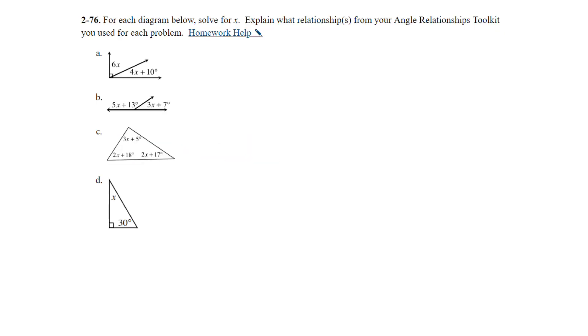Question 76. For each diagram below, solve for x. Explain what relationship or relationships from your angle relationship toolkit you used for each problem. So we'll go ahead and start on part A. We recognize that there is a right angle formed, which means it is complementary to each other. So we've got 6x plus 4x plus 10 degrees is equal to 90 degrees, since it forms a right angle. That will give us 10x is equal to, subtract the 10 to get 80 degrees, then divide by 10, and x is equal to 8 degrees. And we were able to find that because a right angle is 90 degrees. Also, you could put in there that they are complementary.